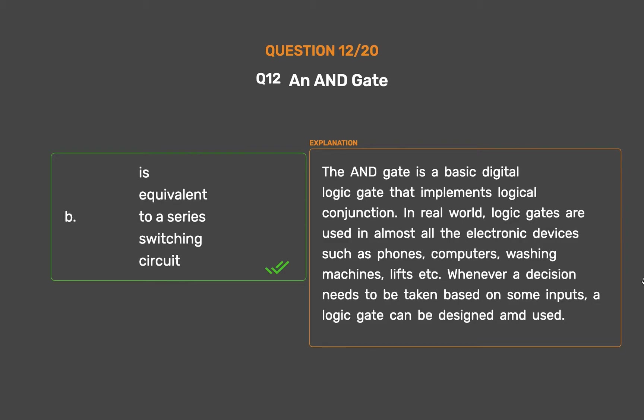The AND gate is a basic digital logic gate that implements logical conjunction. In the real world, logic gates are used in almost all electronic devices such as phones, computers, washing machines, lifts, etc. Whenever a decision needs to be taken based on some inputs, a logic gate can be designed and used.